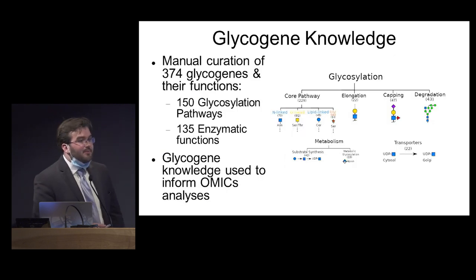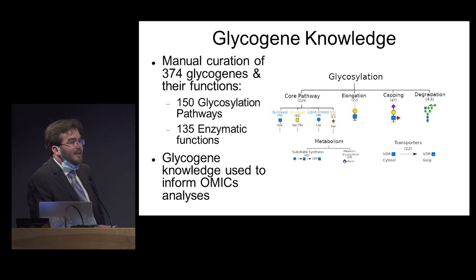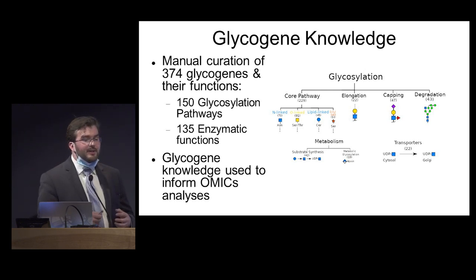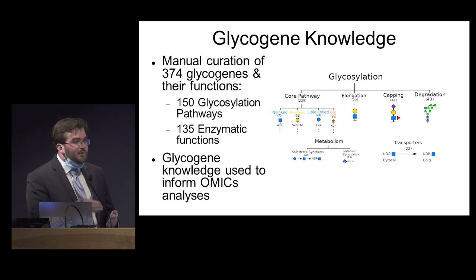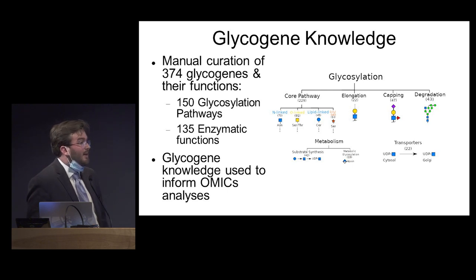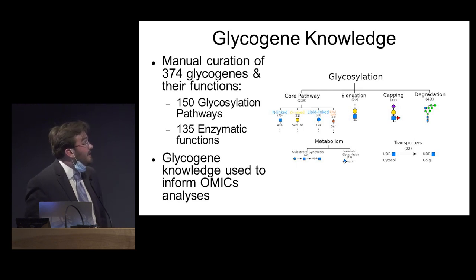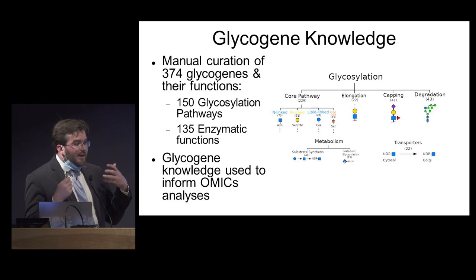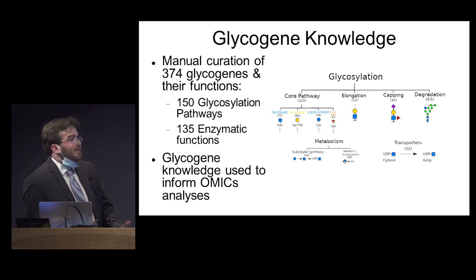Before we go jumping into the analysis, we need a very firm understanding of what we're studying in terms of glycosylation. Glycosylation is a series of enzymatic reactions that happen in a certain order to create certain glycans. In the lab, we manually curate this information by reading textbooks and going to databases. We manually curate the function of 374 different glycogenes, which can all be viewed on our database. These glycogenes are regulating 150 different glycosylation pathways, as well as 135 different enzymatic functions that we're interested in.